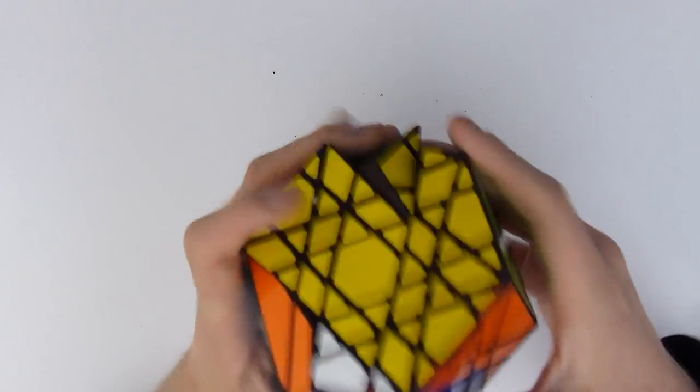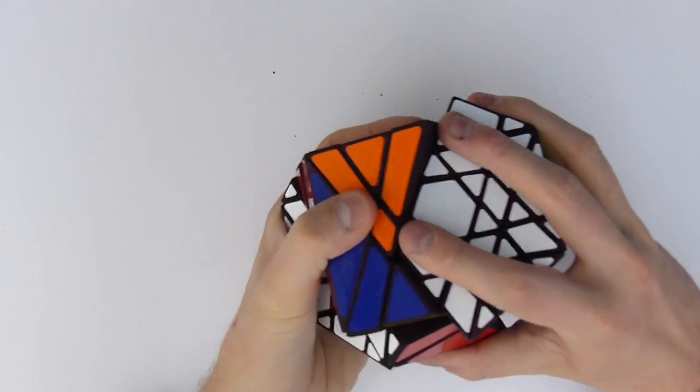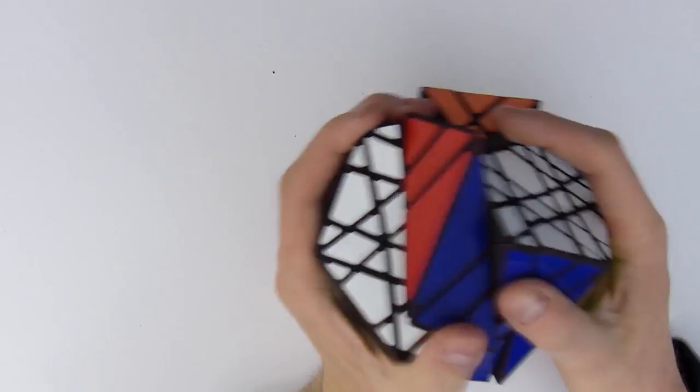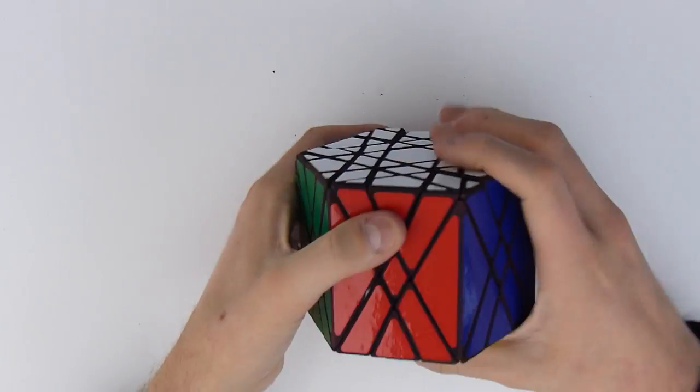Then you could turn it like that. I'm not going to scramble it anymore. So let's just try to put it back to its original shape. So that's correct. This is correct. And back to its original shape. There you go.